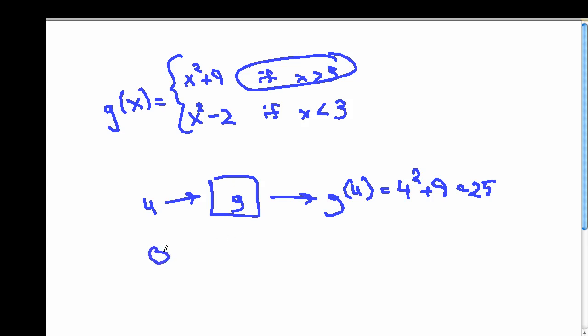Now if I were going to run, say, 0 through this function, what would I get? Well, 0, calculating g of 0, I would use, that falls into this case right here. 0 is less than 3, so the answer would be 0 squared minus 2, which is negative 2.